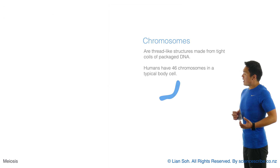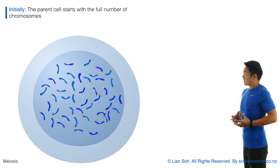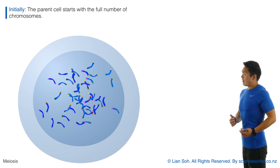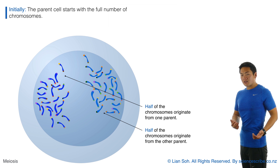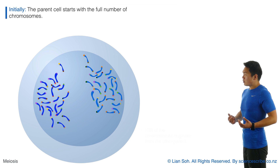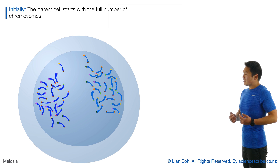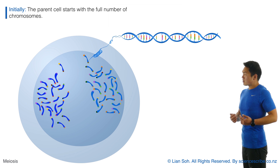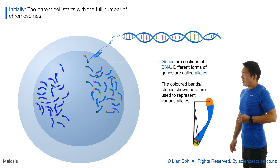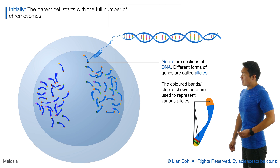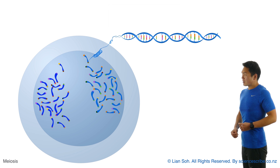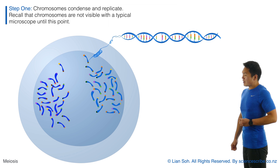In the beginning, there are 46 chromosomes in the cell. I'm going to color code these to show that half originated from the mother and the other half from the father. I also want to mention that in a previous video I discussed chromosomes, DNA, genes, and alleles. I'm going to color code some chromosomes as having certain genes and alleles, because we're going to see how these get mixed up towards the end of meiosis.